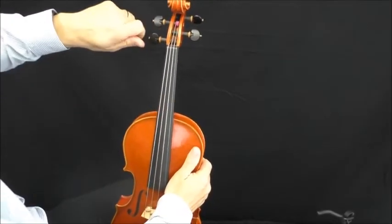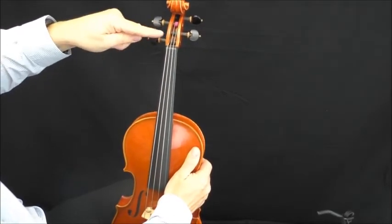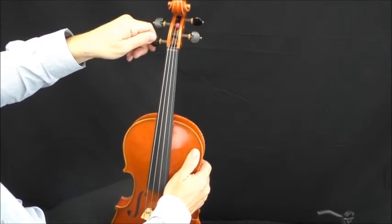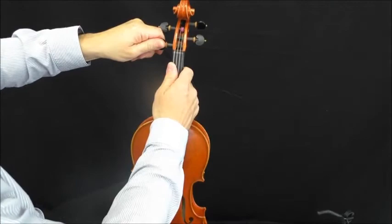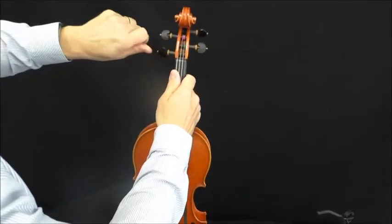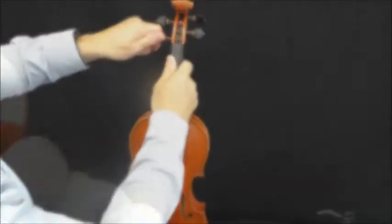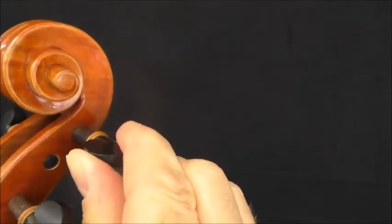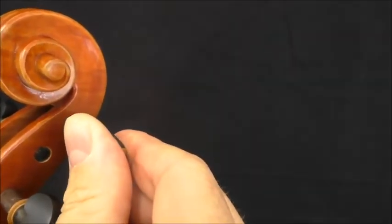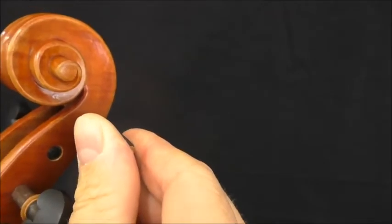When you're tightening the strings, you may need to push the peg inwards towards the peg hole as you turn the peg. This is to make sure the peg grips so that it won't slip back when you have the violin string tuned.